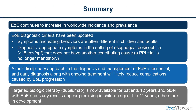In summary, eosinophilic esophagitis continues to increase in worldwide incidence and prevalence. The EOE diagnostic criteria have been updated; symptoms and eating behaviors are often different in children and adults. Diagnosis involves appropriate symptoms in the setting of esophageal eosinophilia greater than or equal to 15 eosinophils per high-power field that does not have another contributing cause. A PPI trial is no longer mandatory. A multidisciplinary approach in the diagnosis and management of EOE is essential, and early diagnosis along with ongoing treatment will likely reduce complications caused by EOE progression. Targeted biologic therapy — dupilumab — is now available for patients 12 years of age and older with EOE, and study results appear promising in children aged 1 to 11 years, with other biologic agents in development. Thank you so much for joining me today.